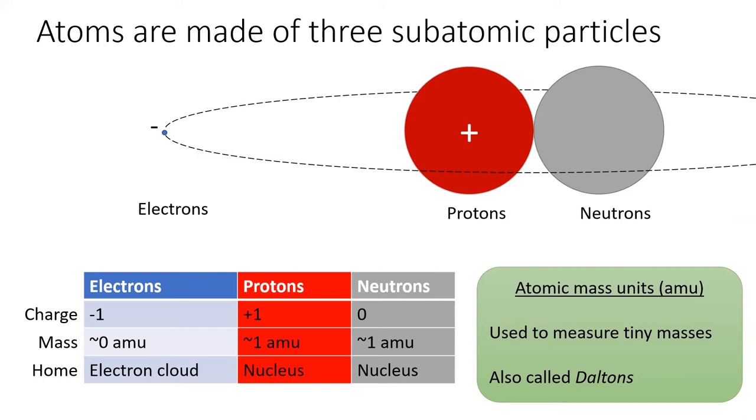Electrons contain a negative one charge, while protons contain a positive one charge. Neutrons are uncharged.